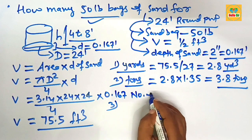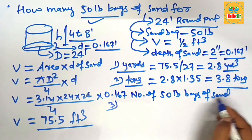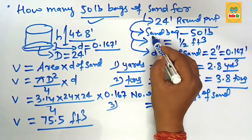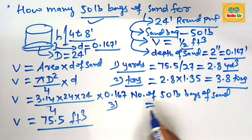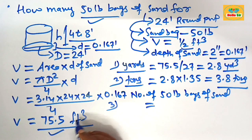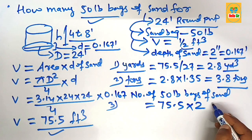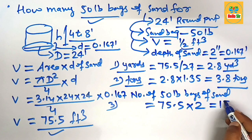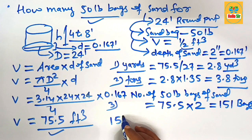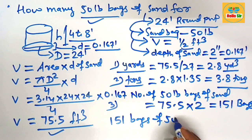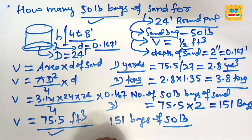To find the number of 50-pound bags of sand: each 50-pound bag yields a volume of about half a cubic foot, and the total is 75.5 cubic feet, so we multiply 75.5 by 2. This yields approximately 151 bags. You need approximately 151 bags of 50-pound sand for leveling a 24-foot round pool. Thank you.